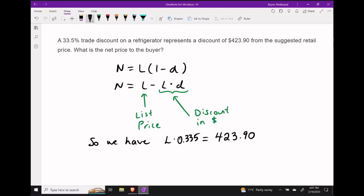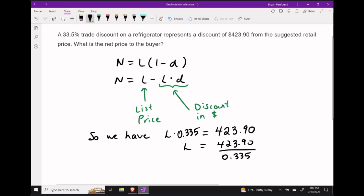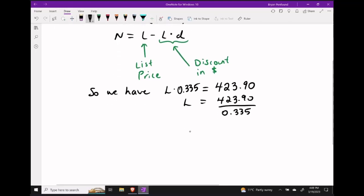In other words we know that if we take the list price and multiply it by 33.5% we should end up with $423.90. So if we take this equation that we've made and we divide both sides by 0.335, this should allow us to solve for the list price.